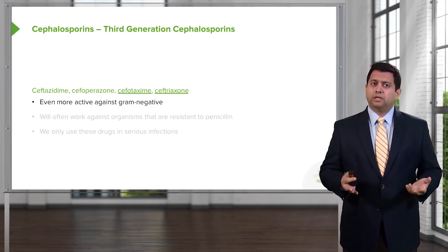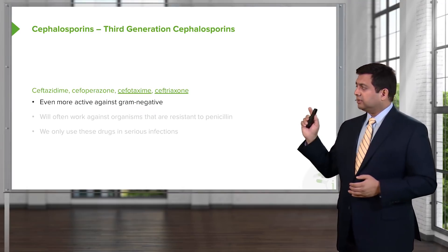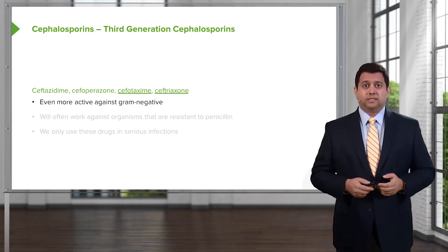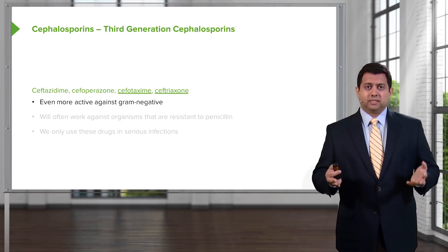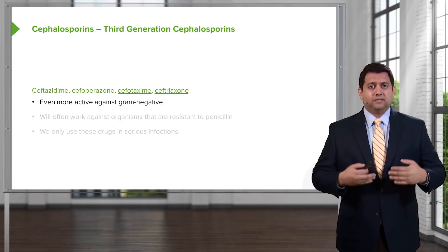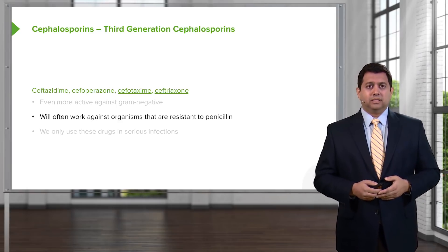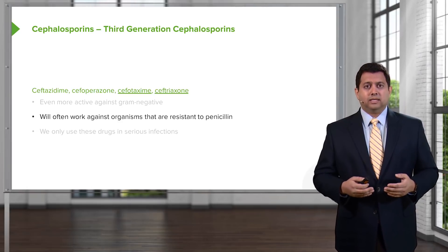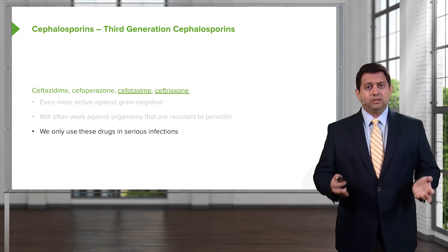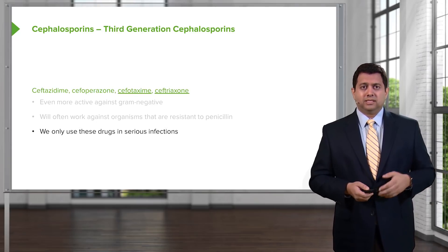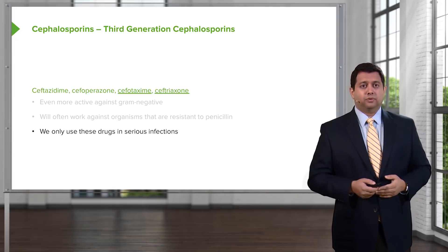The third generation agents are more gram-negative active. The key drugs are cefotaxime and ceftriaxone. Cefotaxime is our go-to drug — a very good gram-negative agent that will often work against organisms resistant to penicillin. We only use these drugs in serious infections, and in general they're only available in intravenous form.